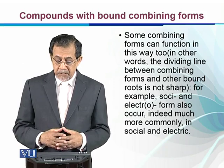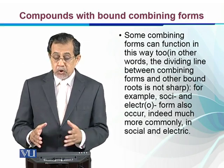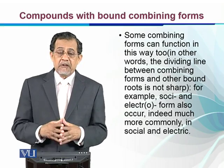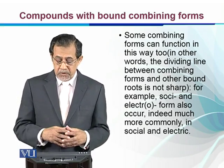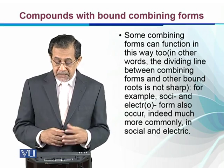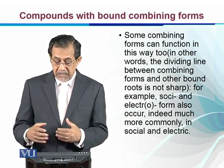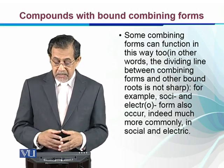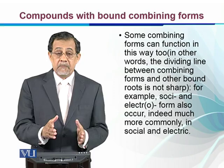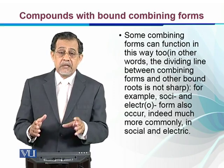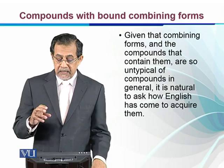Some combining forms can function in the same way. In other words, the dividing line between a combining form and other bound roots is not sharp — we cannot very precisely draw that line. For example, forms like 'soci' and 'electr' also occur very commonly in social and electric, making it difficult to determine exactly where the bound morpheme ends and the combining form begins.